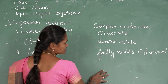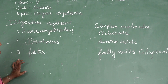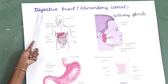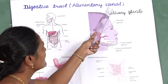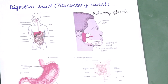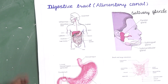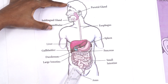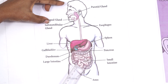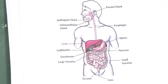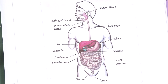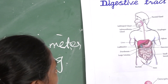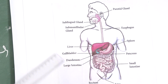The digestive system is divided into two parts. One is the digestive tract, also called the alimentary canal. The other is the digestive glands. The alimentary canal is a coiled muscular tube extending from the mouth to the anus, about six to nine meters long, consisting of many specialized divisions.